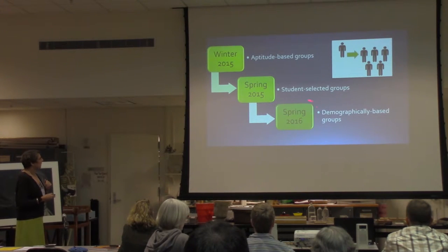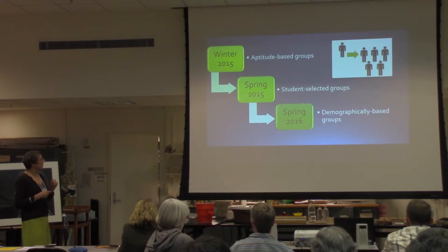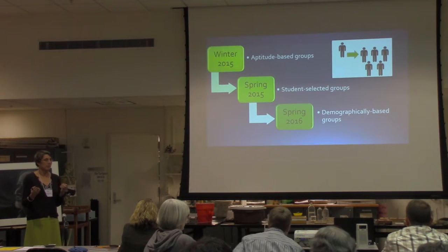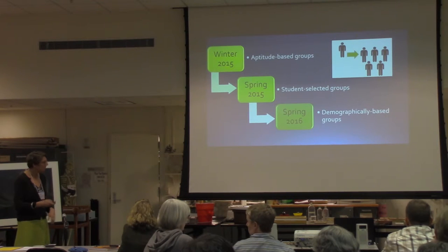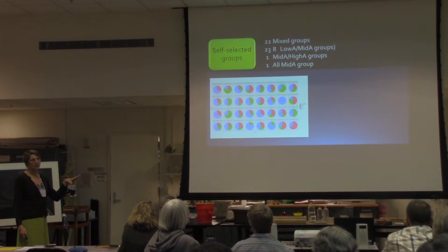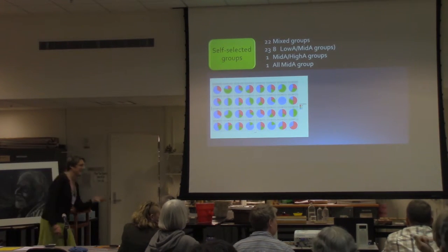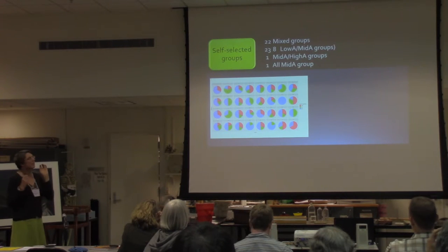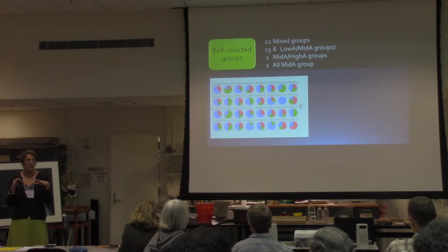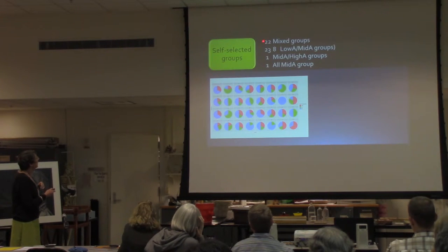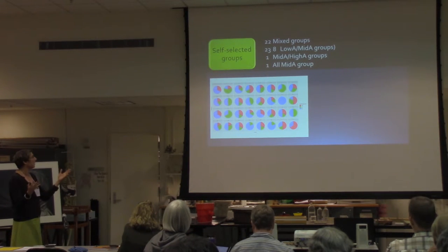The second study allowed students to self-select their groups, which is a common approach many instructors use. Students were given advance notice that they would be forming groups. We ended up with 22 mixed groups, meaning at least one high, one mid, and one low aptitude student in the group.